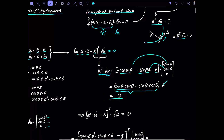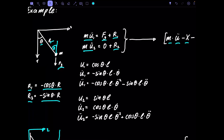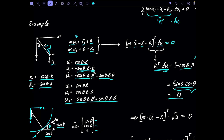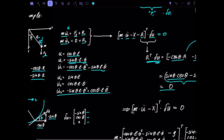Now we write the positions and accelerations. Position u₁ = l·cosine(θ). The first derivative is u̇₁ = -sine(θ)·l·θ̇. The acceleration is ü₁ = -cosine(θ)·l·θ̇² - sine(θ)·l·θ̈, since we differentiate once for velocity and again for acceleration. We then do the same for the acceleration in the second direction u₂.